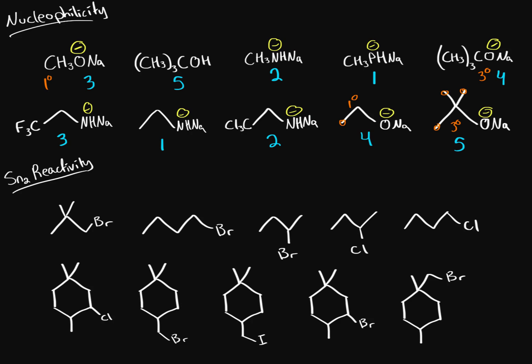Now let's do SN2 reactivity. What is SN2 reactivity and how does it work? We are looking at two things: the leaving group — the functional group that's going to leave — and the neighbors of the leaving group, meaning is it sterically hindered? The third thing is the actual carbon itself that the leaving group is attached to: is it primary, secondary, or tertiary?